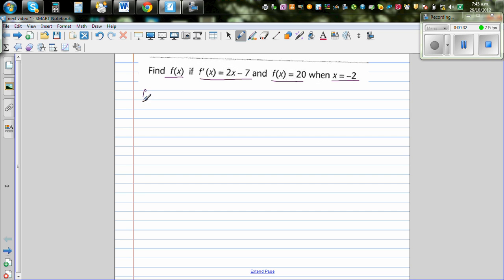So let's write, f'(x) is given to be 2x minus 7. Now, whenever you have f'(x), this is a different way of writing dy/dx. This implies if you want to find the function from the gradient function, you have to integrate the gradient function.